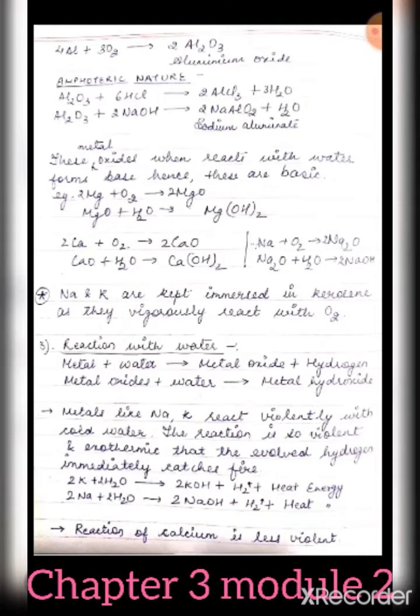The third reaction is the reaction with water. When a metal reacts with water it forms metal oxide plus hydrogen gas, and when metal oxide further reacts with water it forms metal hydroxide. Metals like sodium and potassium react violently with cold water — they are very vigorous in reaction and can react with cold, hot, or steam forms of water.